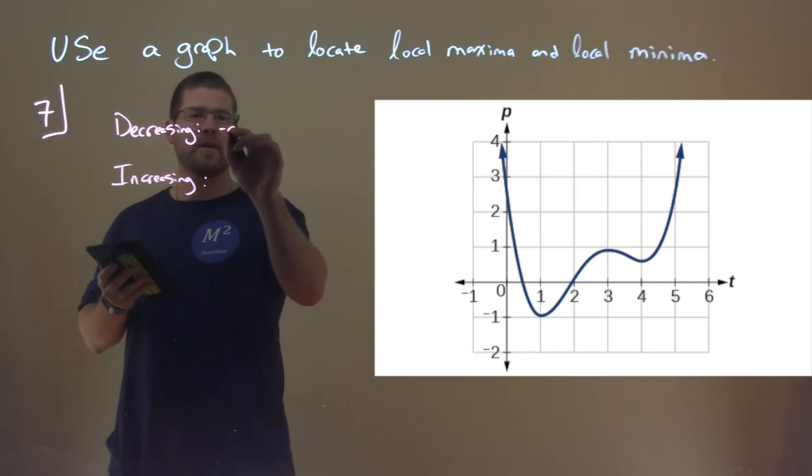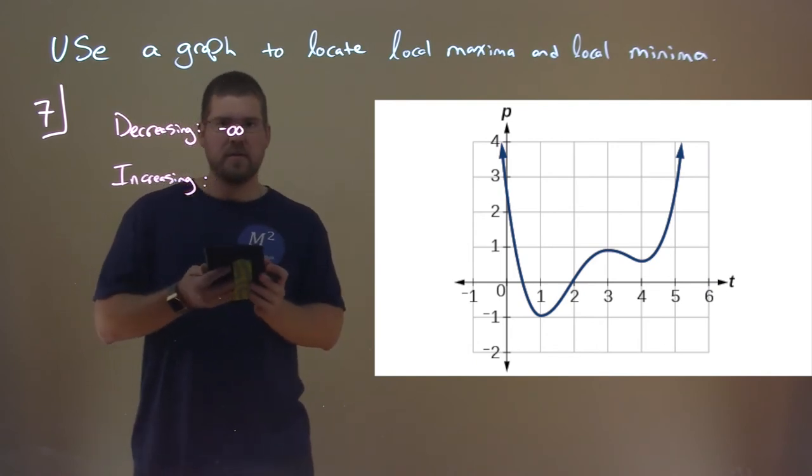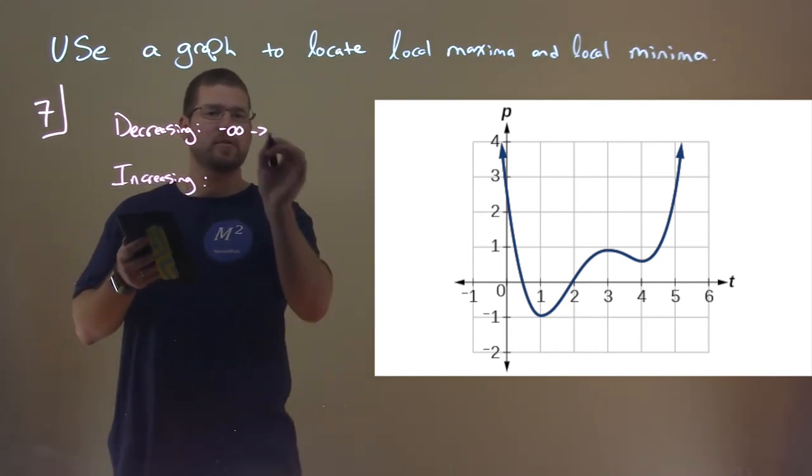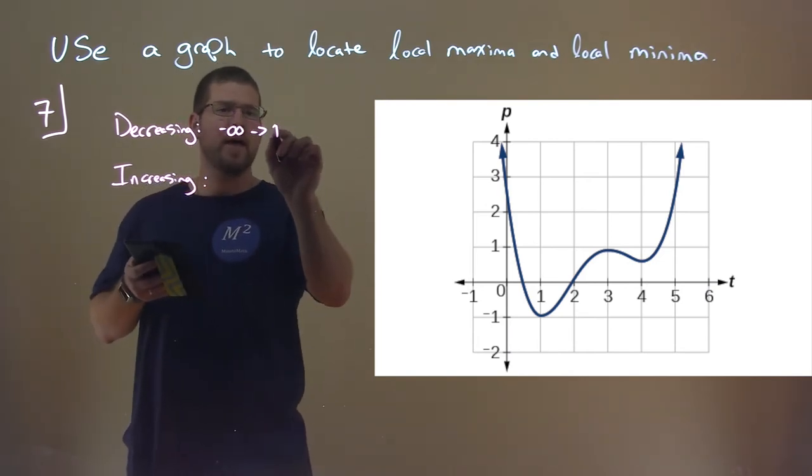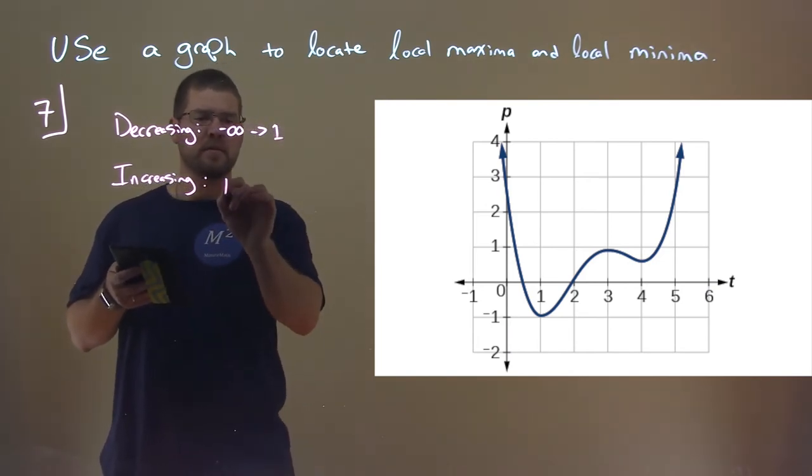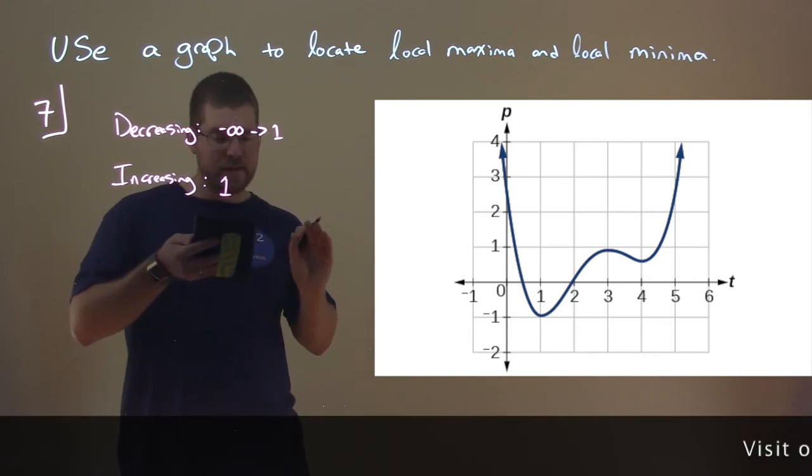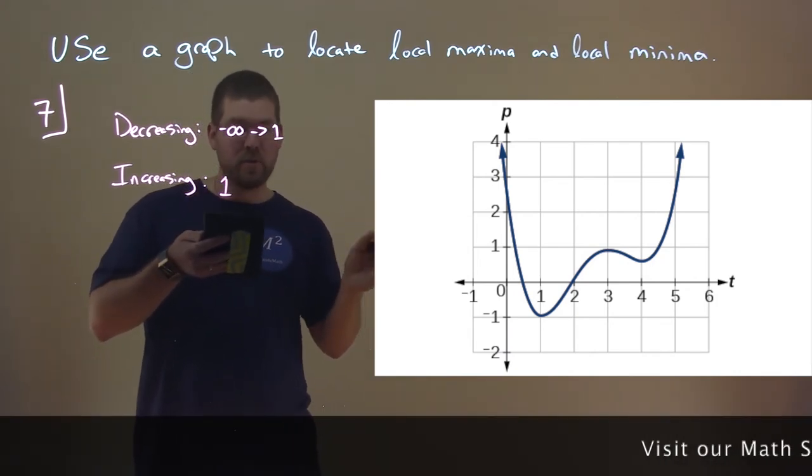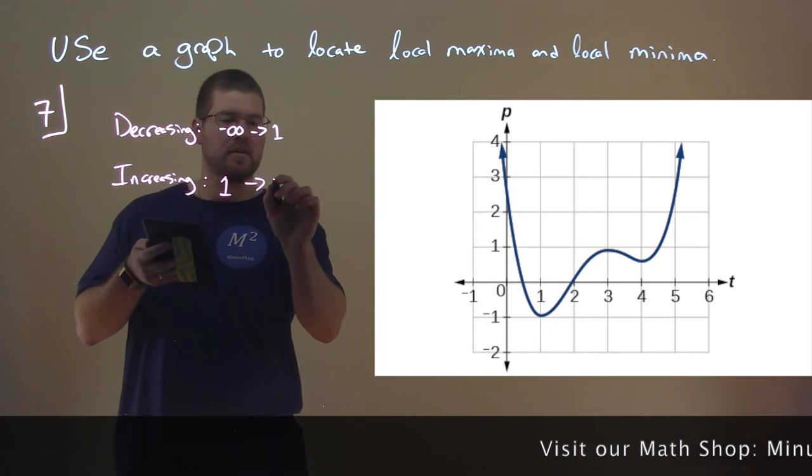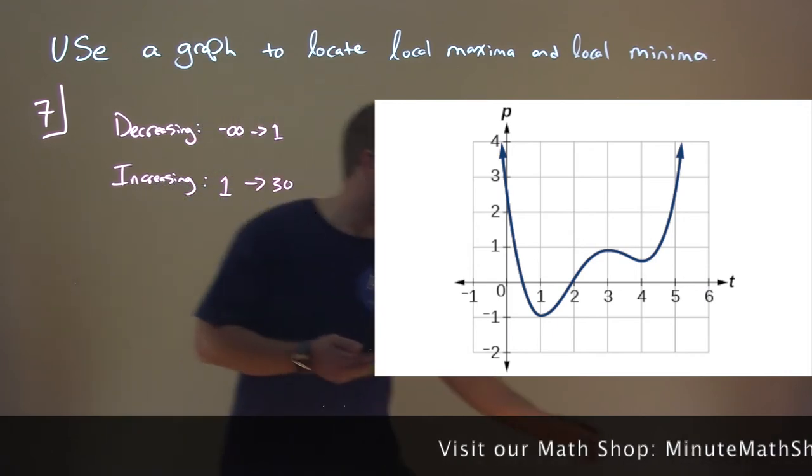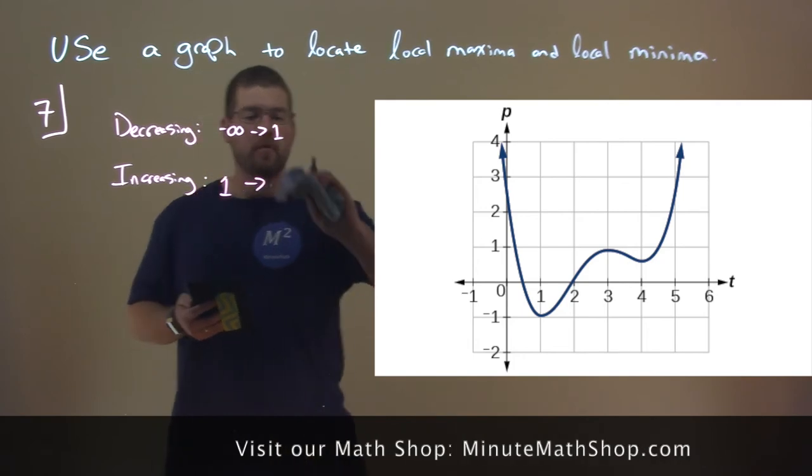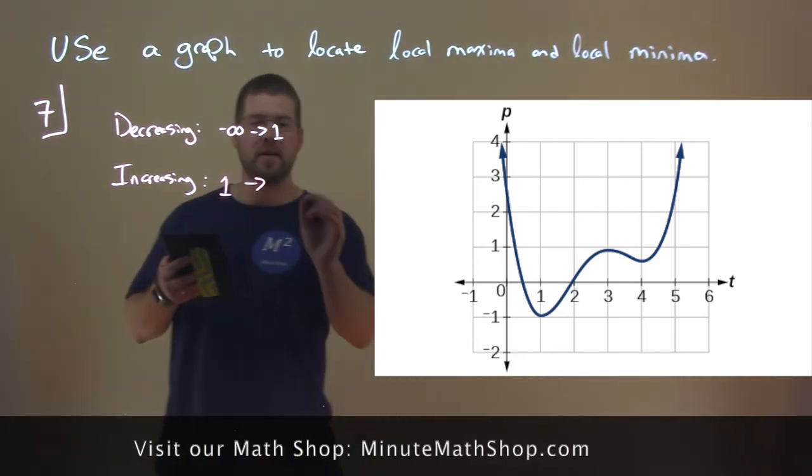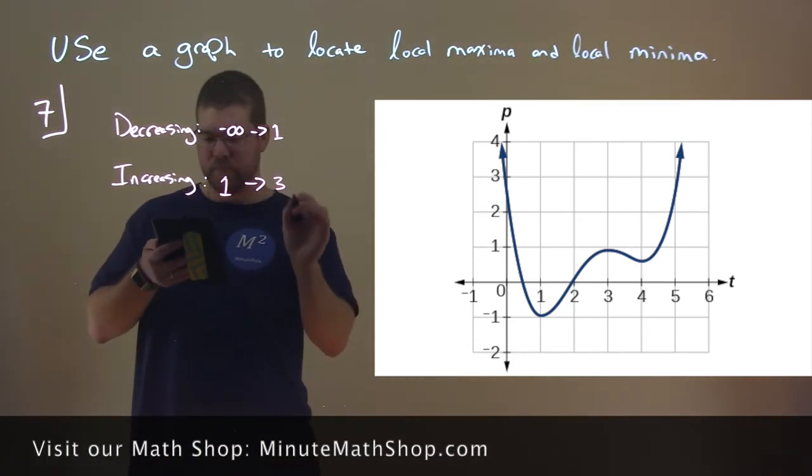So it's decreasing first from negative infinity, negative infinity to what? To one. Down to bottom one, and then from one, it looks like it keeps increasing all the way to three. From one to three, it looks like it's increasing. It has a maximum there.